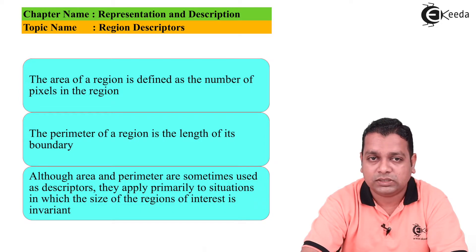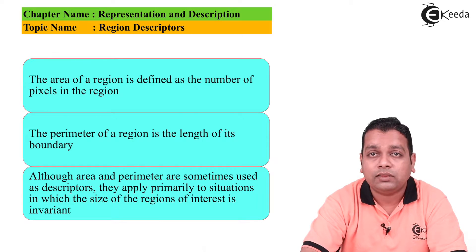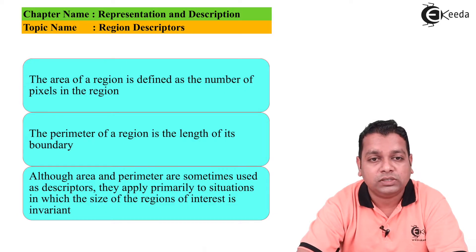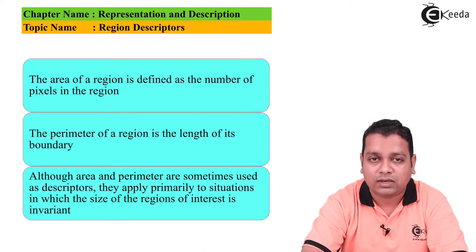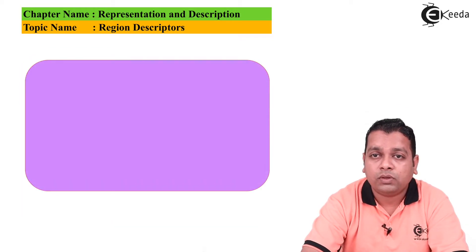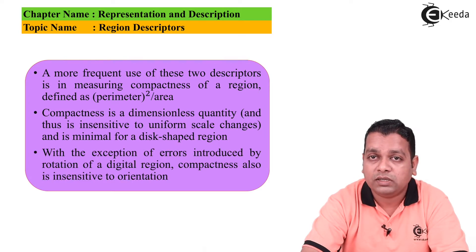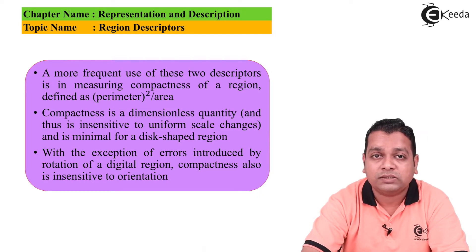The area of the region can be defined as the number of pixels present in that specific region. The perimeter of the region is the length of the given regional boundary. Although area and perimeter are sometimes used as descriptors, they apply primarily to situations where the size of regions of interest is invariant. A more frequent use is in the measurement of compactness of the region, defined as perimeter square divided by its area.